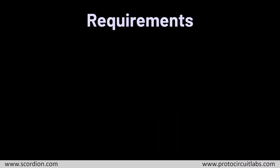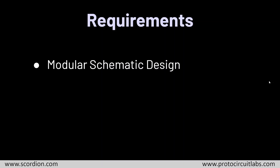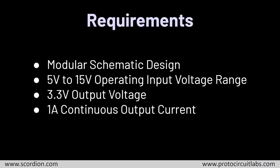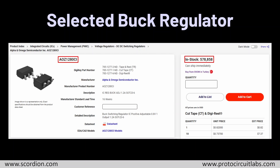Let's first see what the requirements are. First of all, it needs to be a modular schematic design that I can use in different projects by just copy and pasting this module. The operating input voltage range should be between 5V to 15V, output voltage should be 3.3V but I also need to be able to change it easily by just changing the resistor values, and finally it should support 1 ampere of continuous output current.